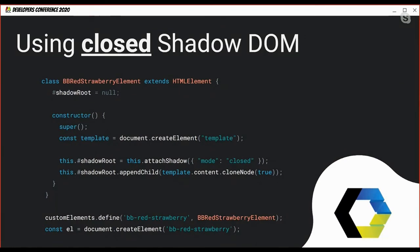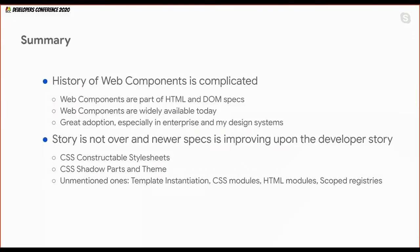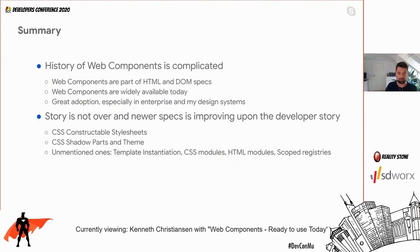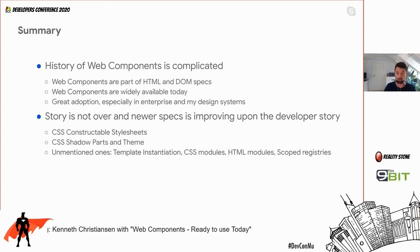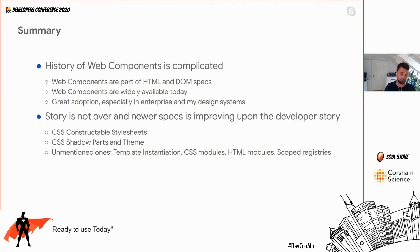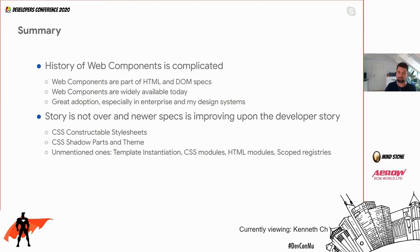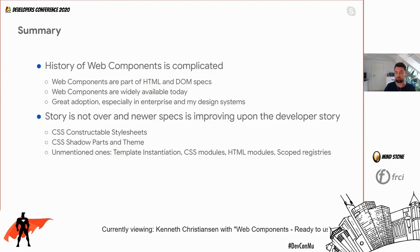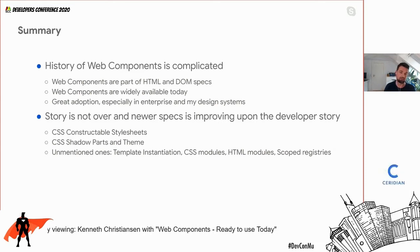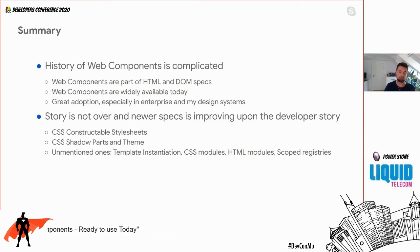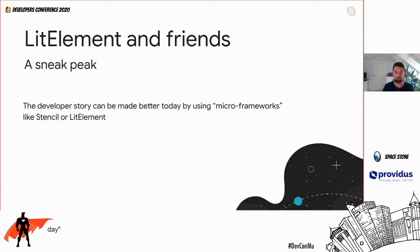In summary, web components today are part of the HTML and DOM specs — not separate specs — and they are widely available and gaining good adoption, especially in enterprise and design systems. Things that can still be improved: shadow parts are available in many places; constructible stylesheets are in Chrome but not as far elsewhere. Coming soon: CSS modules, module scope registries, and form participation — which allows elements to participate in form submission without building all the infrastructure around forms.